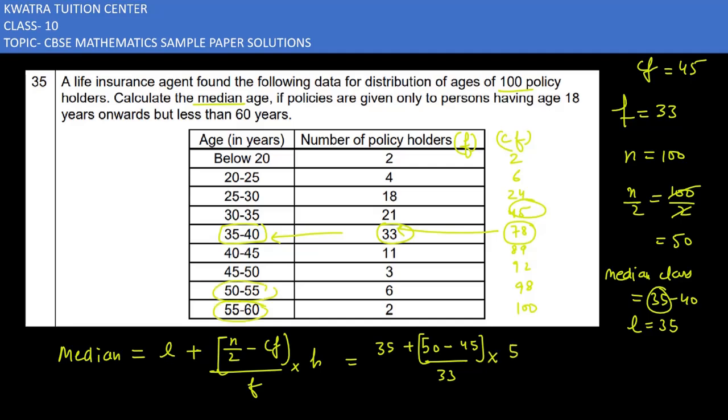If you look at the median class, it is 5. So H would be 5. Then you have 35 plus 50 minus 45 is 5, 5 into 5 over 33. So you are getting 35 plus 25 over 33. Divide and when you divide these two, you will get 0.76. And adding 35 and 0.76 will give you 35.76 years.